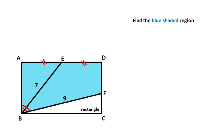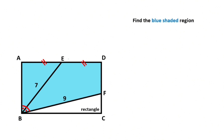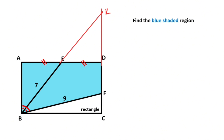In this video we have one rectangle where this length is given as seven and this length is given as nine. Point E is given as a midpoint, and these two angles are given as equal. The question is: what is the value of the blue shaded region? First step, if we extend corner E and corner D like this, we get point K. I want to represent these angles with alpha.